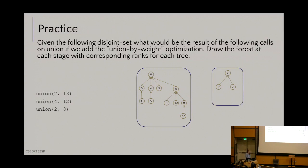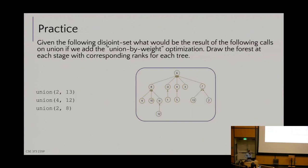All I have to do is update one pointer, which is really nice. Final: union(2, 8). If I call find(2), I get 7 — it got a new parent, it was adopted. And if I call find(8), I get 6. So 7 points to 6, and there we go — one big happy family set. The final overall root is 6.